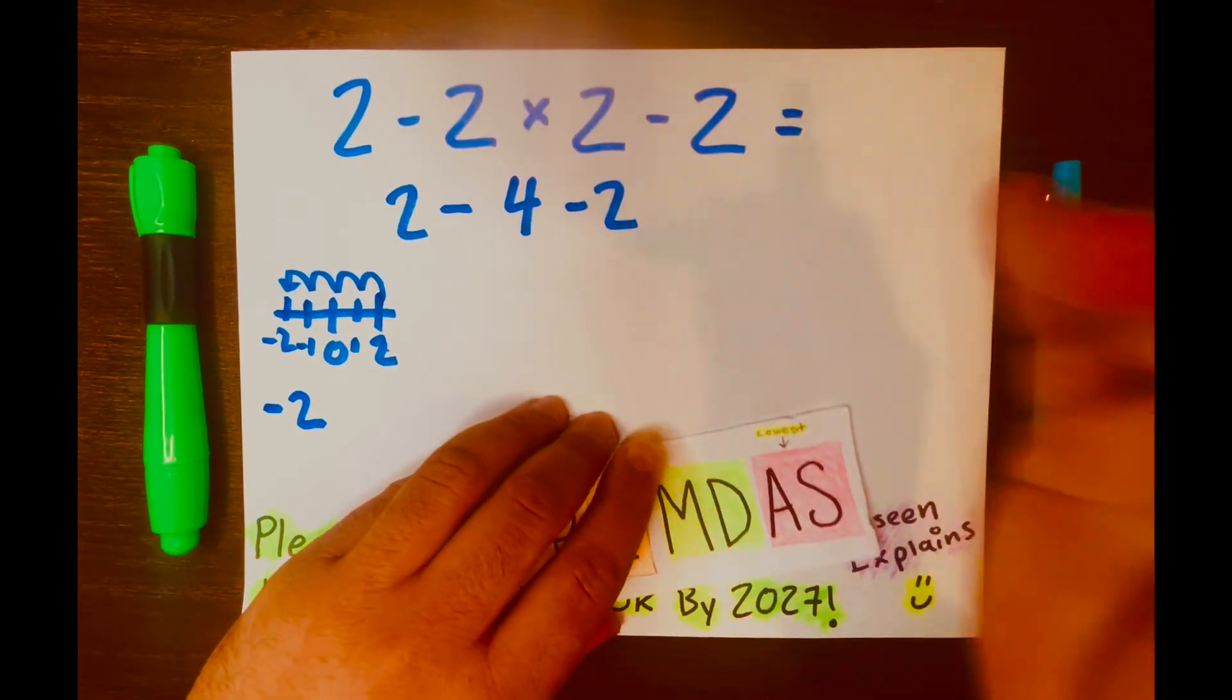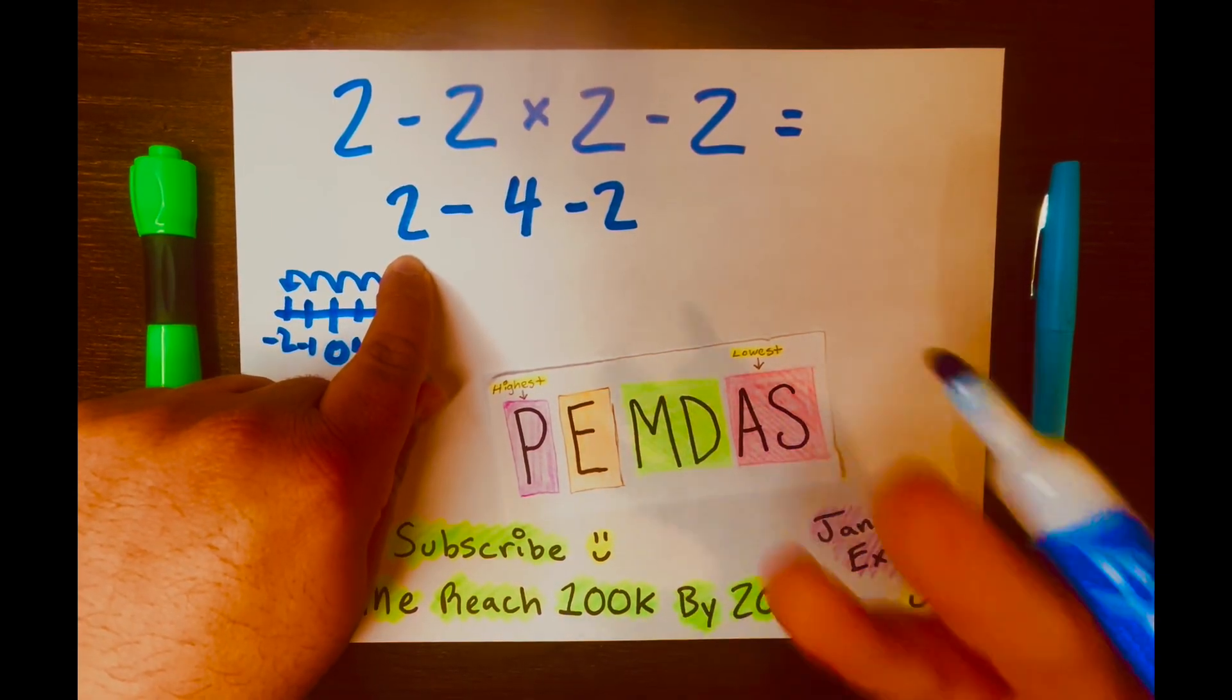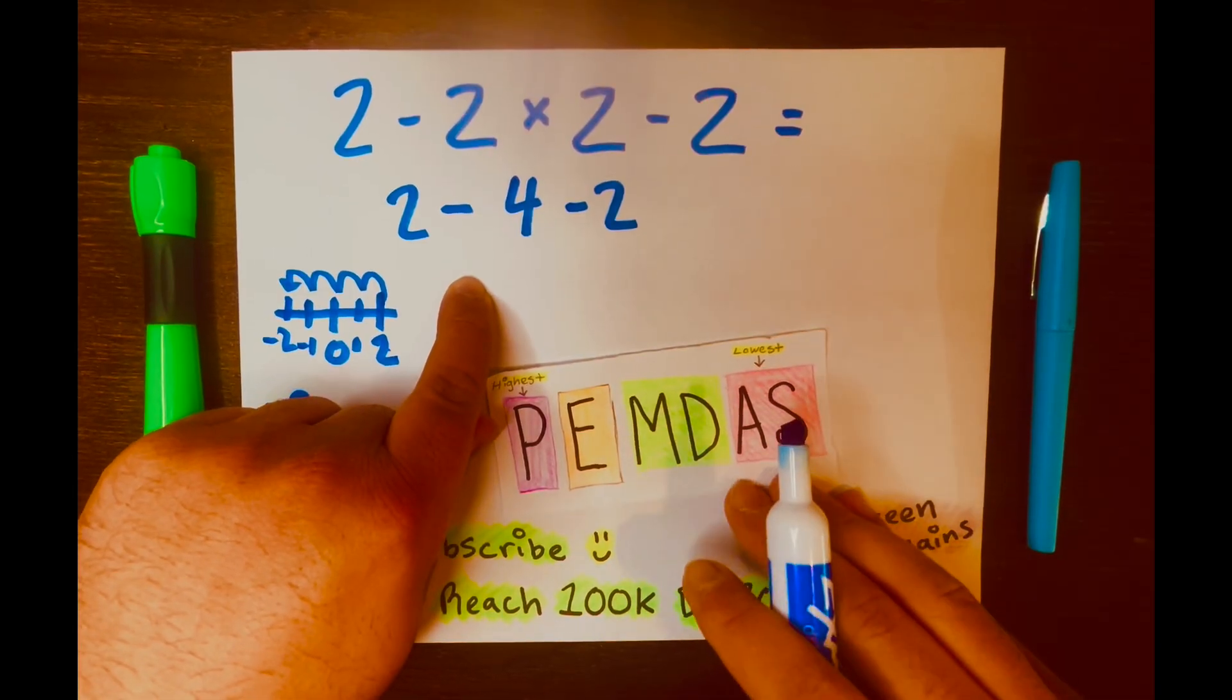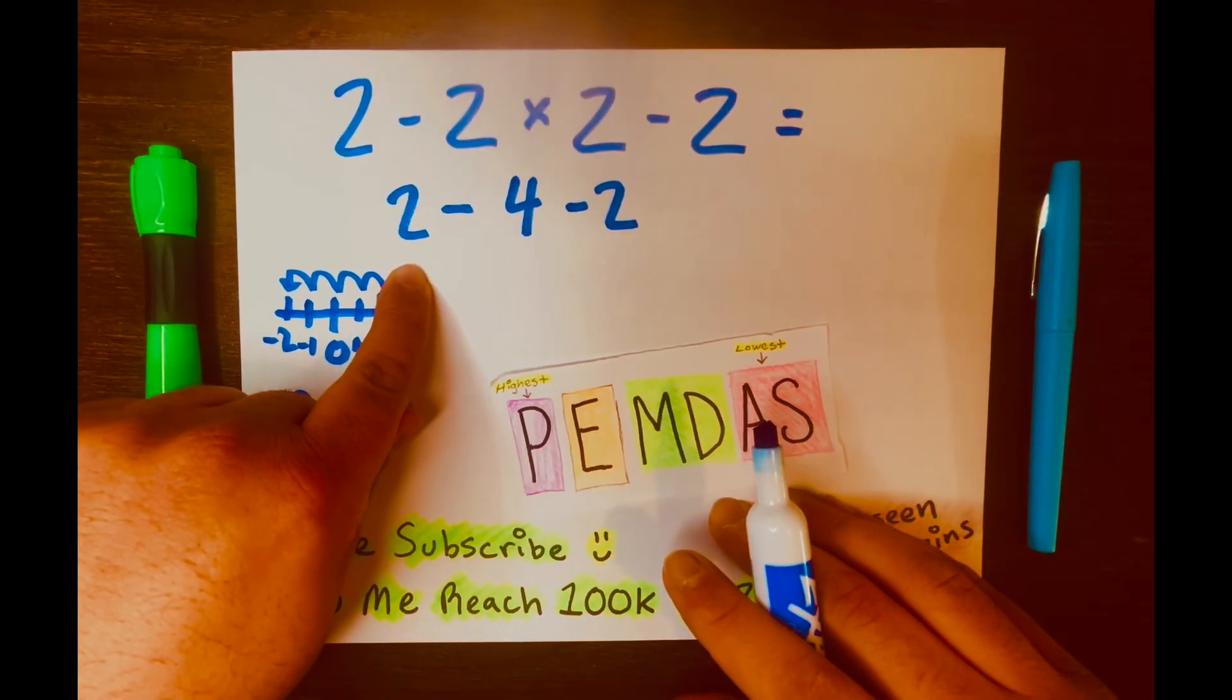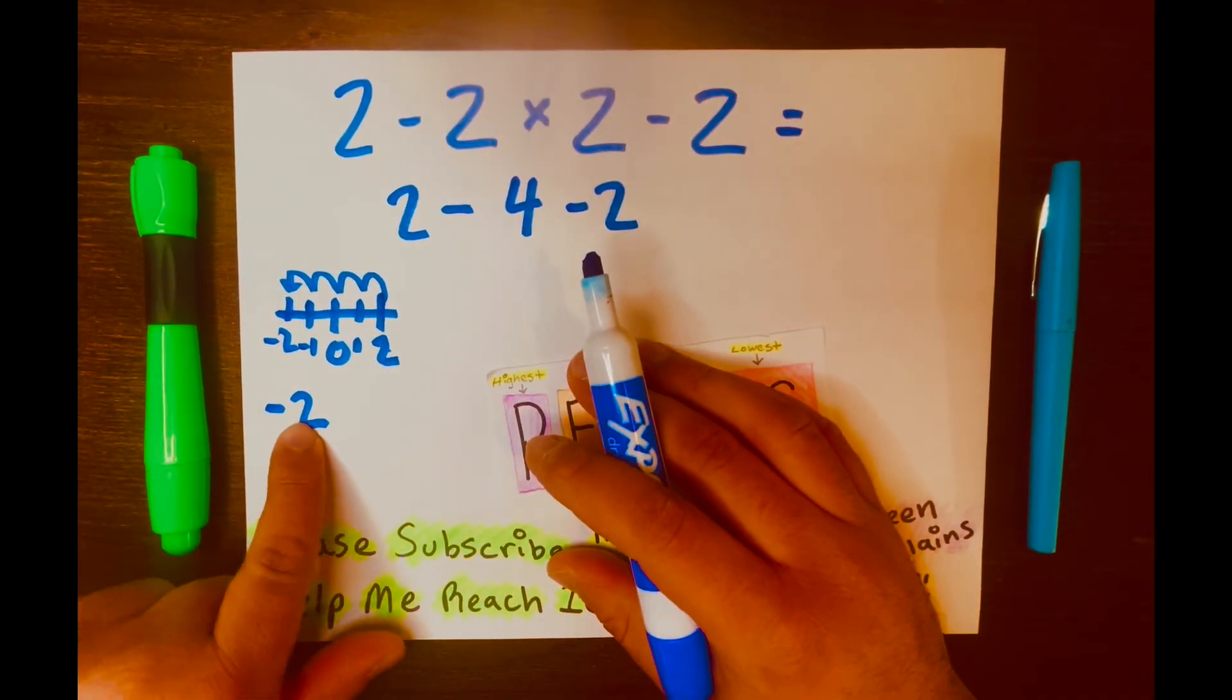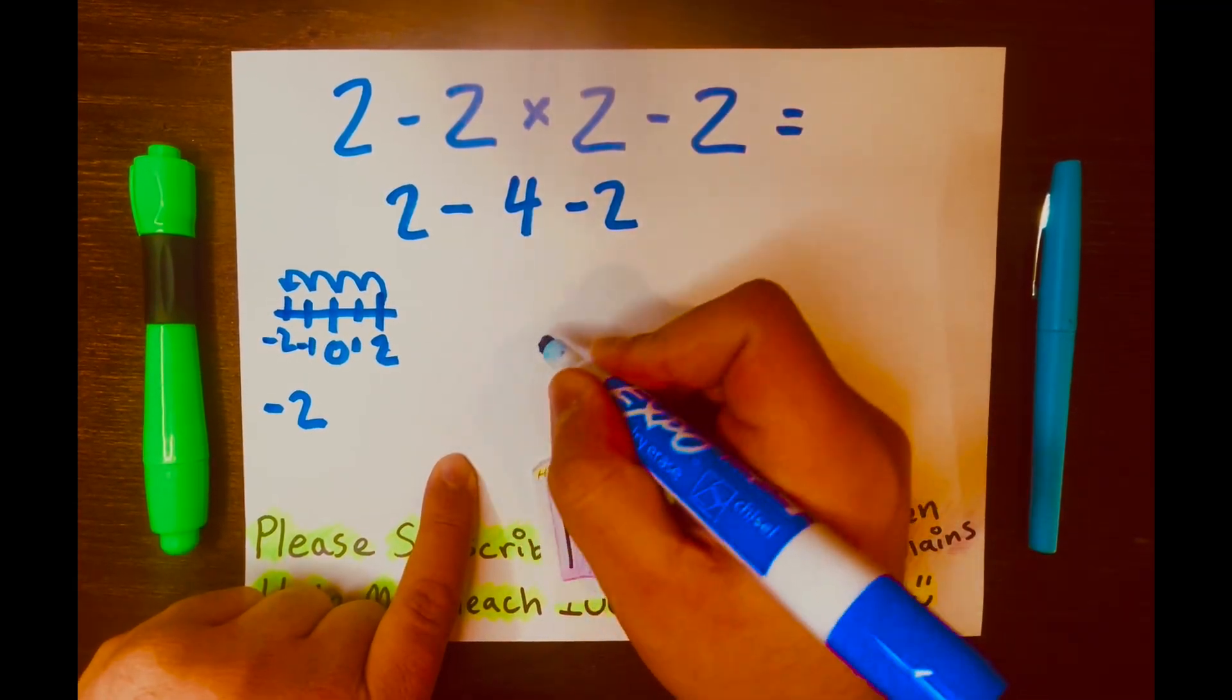Now, the money scenario. So if you have $2 and you need to pay someone $4, and you only gave that person $2 because that's all you have, you still owe that person another $2. So the answer is negative 2. And the negative sign next to the 2 is telling you that you owe $2.